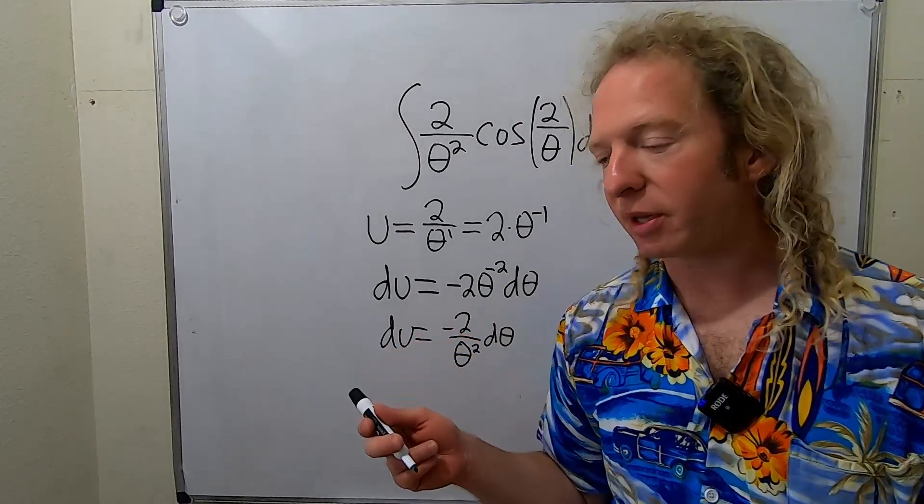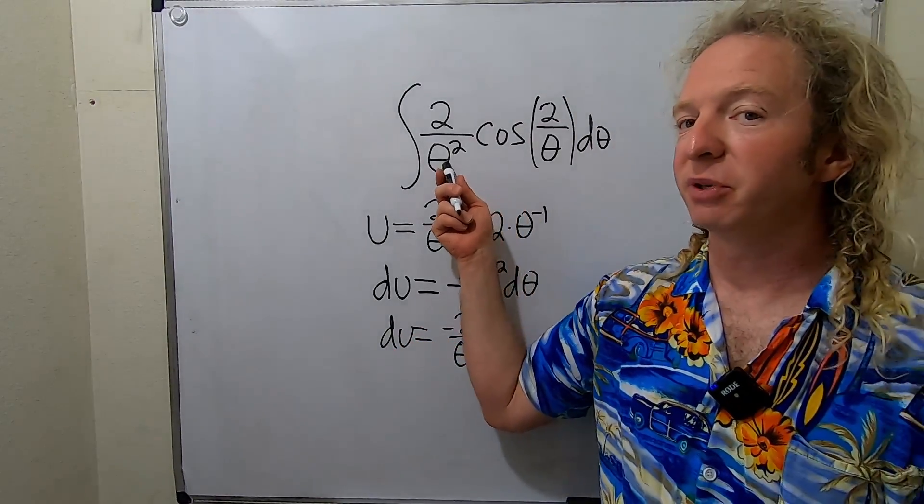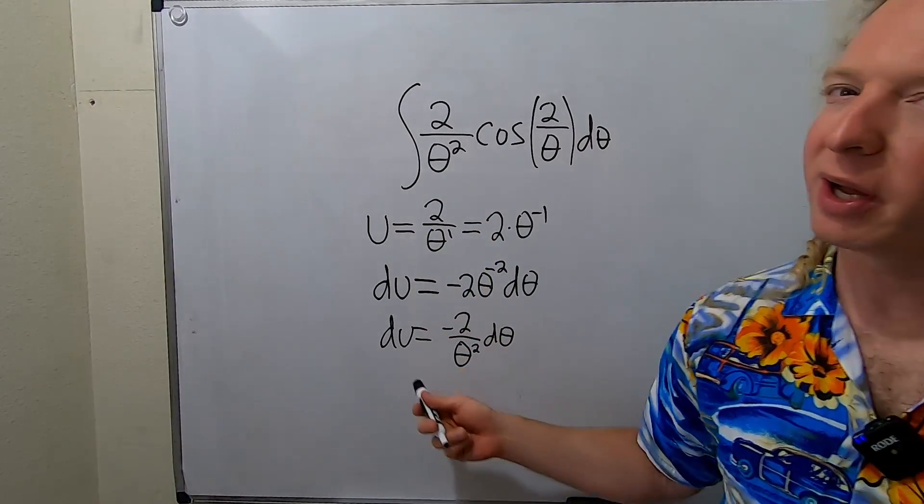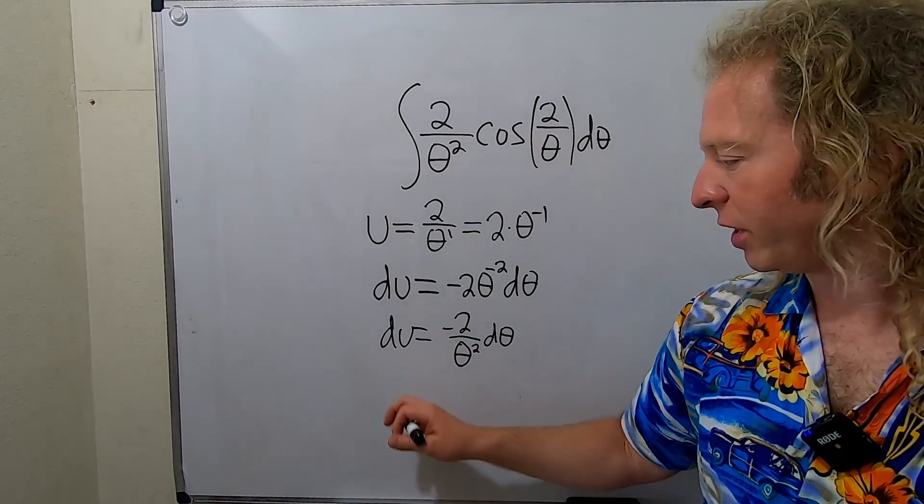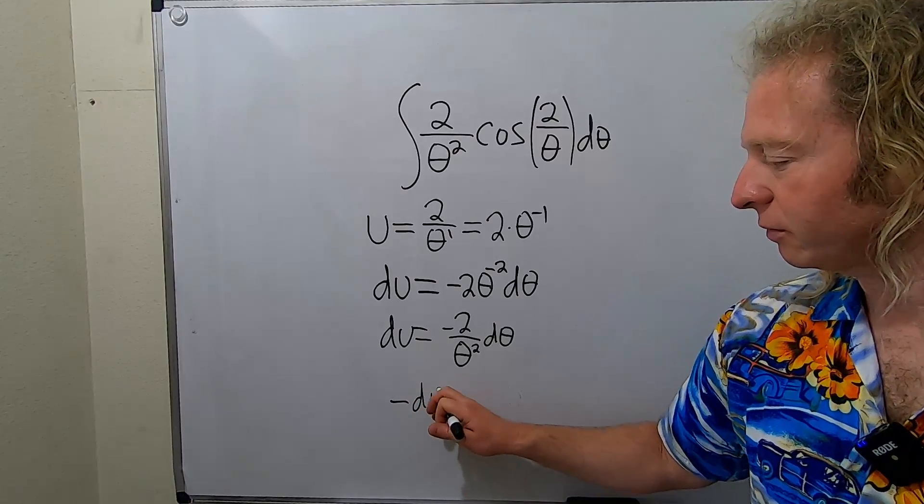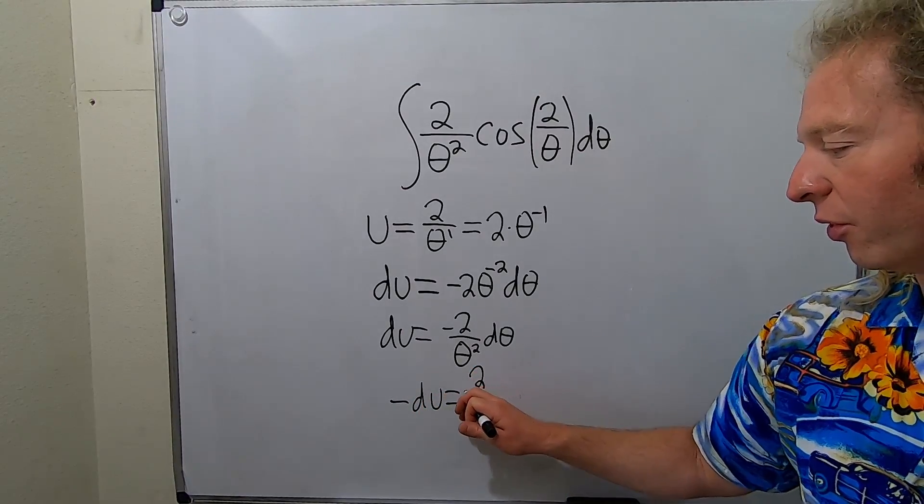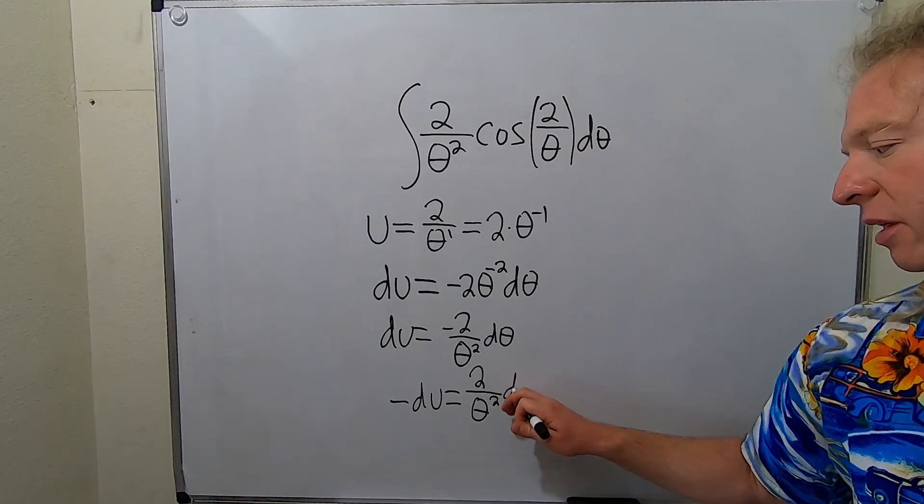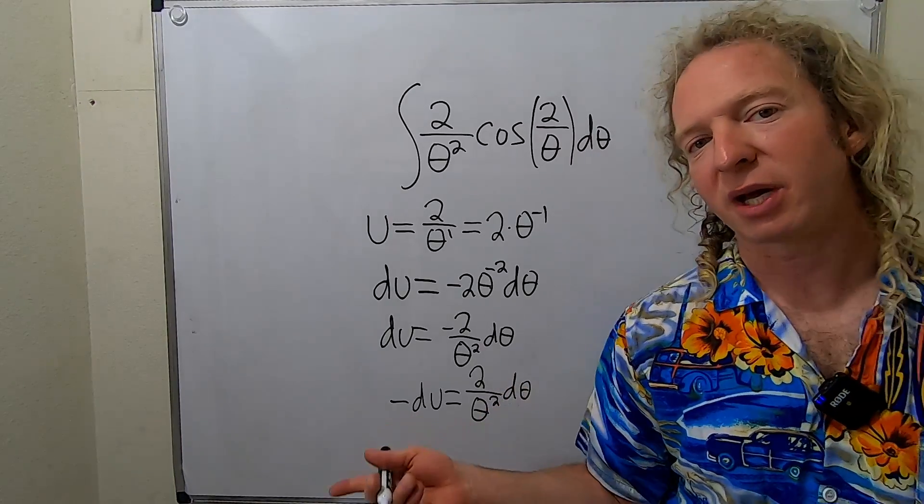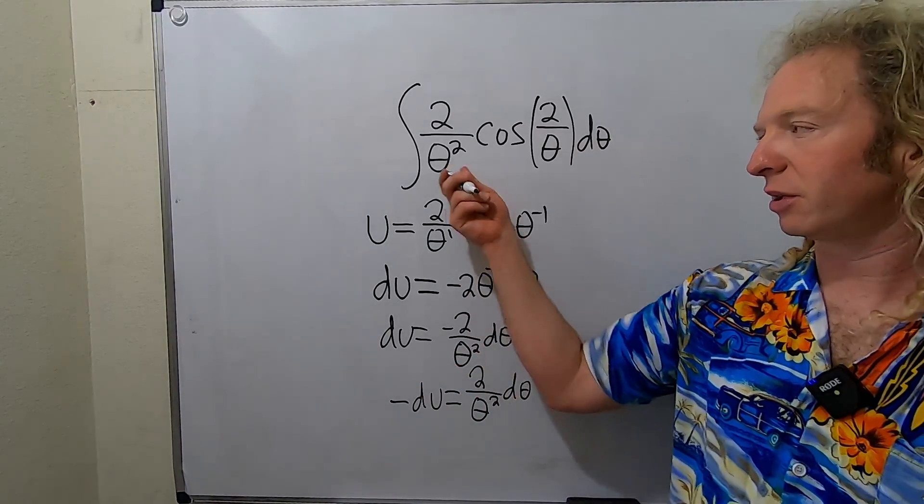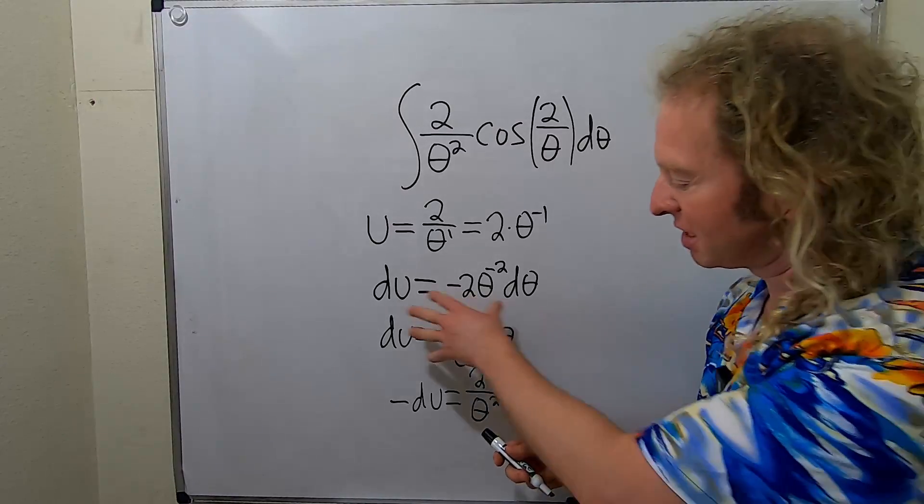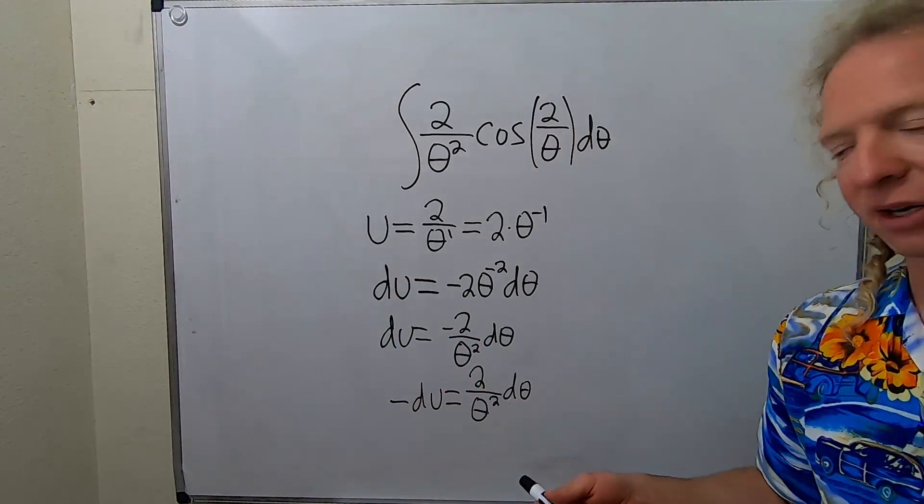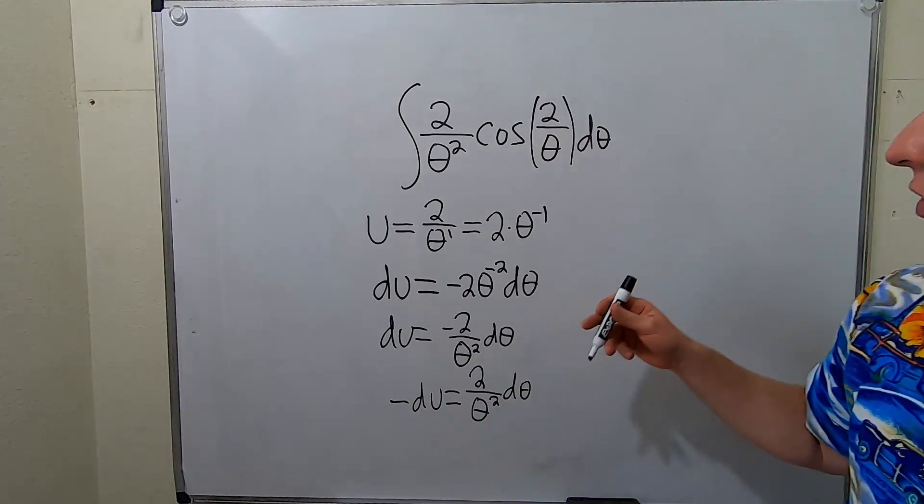Now notice that there is no negative sign here, but there is one here. So if we multiply or divide by negative 1, we end up with negative du equals 2 over theta squared d-theta. The reason we do that is because we want this to look like this. So we basically multiply or divide by negative 1. Now we're in a good place.